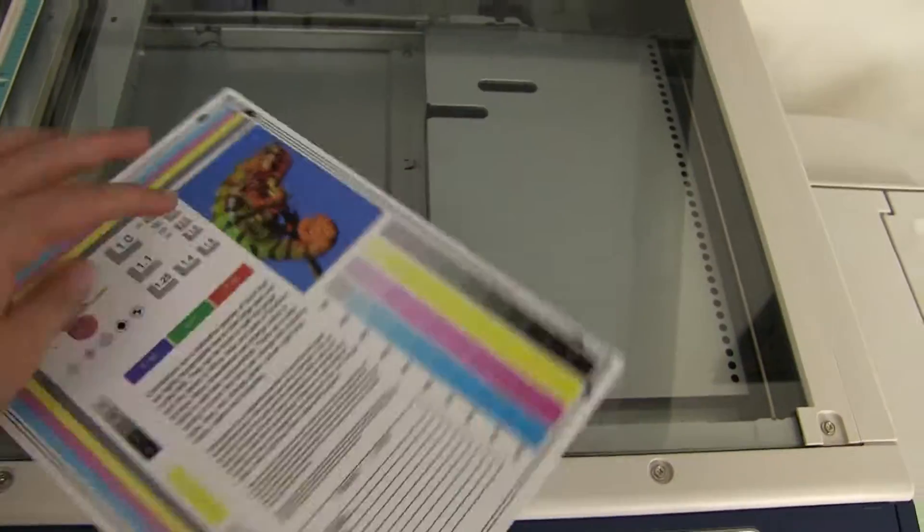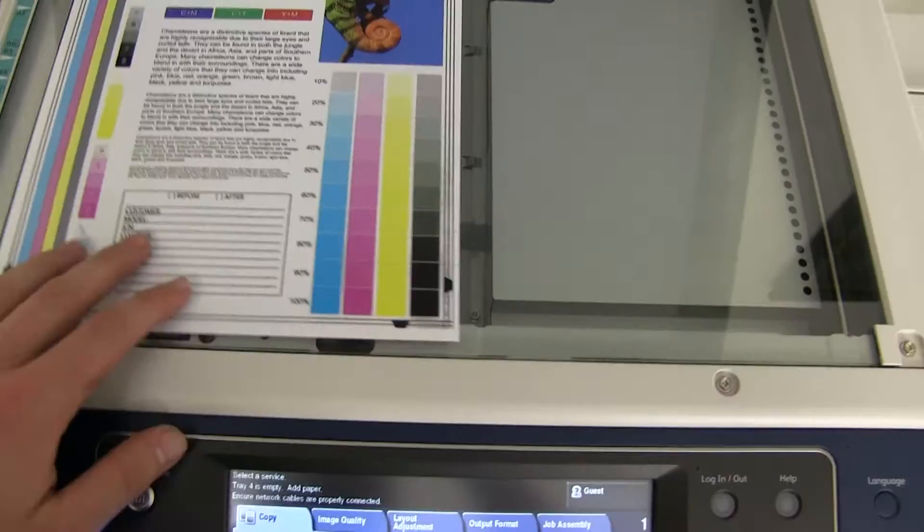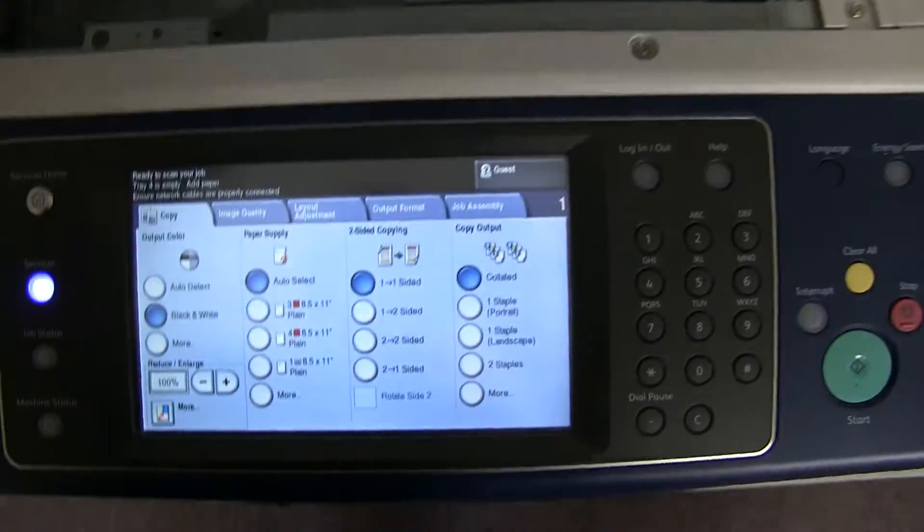Now we're going to go ahead and run a few test copies to show the color quality of this machine. Here we have our color copy test chart. And we'll just go ahead and run two color copies.